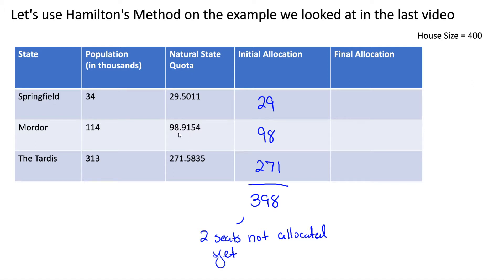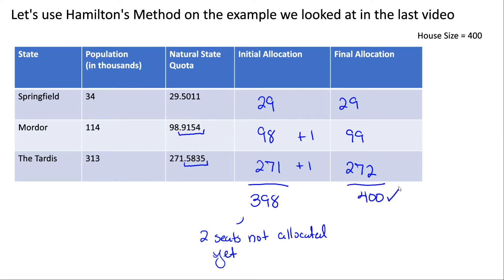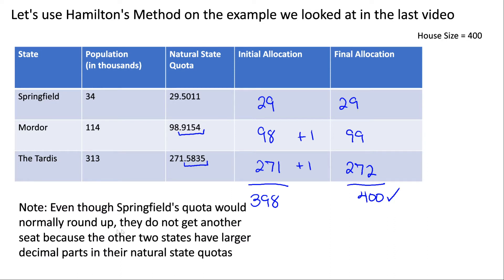The first largest decimal is 0.9154, so that state gets one extra seat and ends up with 99. The next largest decimal is 0.5835, so they also get one of the extra seats. For our final allocation: Springfield gets 29, Mordor gets 99, and Tardis gets 272 — this adds up to 400, which is the correct house size. Note that even though Springfield's quota would normally round up due to 0.5, they don't get another seat because the other two states have larger decimal parts. It always goes from largest to smallest decimal when giving out extra seats.